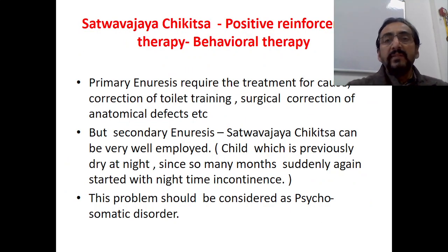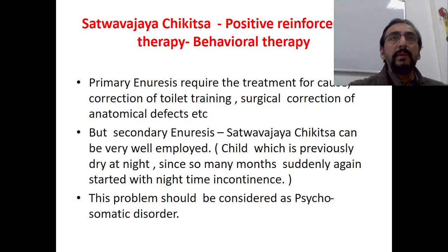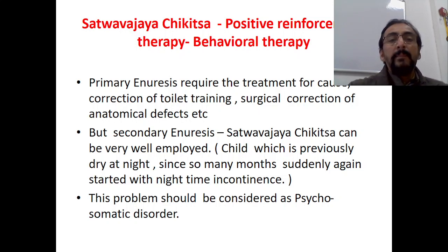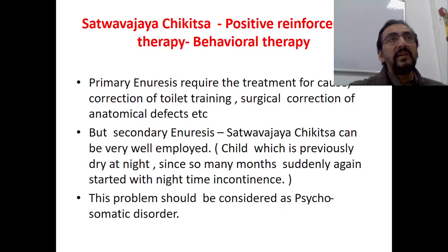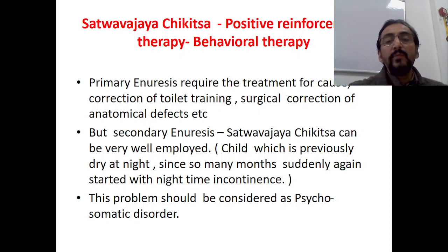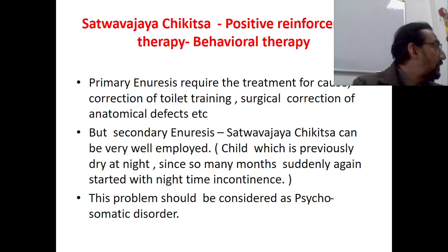Sattva Vajaya Chikisa is nothing but positive reinforcement therapy according to Ayurveda. It includes behavioral therapy, occupational therapy, and everything explained in contemporary science. Primary enuresis requires treatment for the cause and correction of toilet training, along with surgical correction of anatomical or congenital defects. Secondary enuresis — the regressive type — is basically due to psychological problems, stress problems, and maladaptation; Sattva Vajaya Chikisa can be very well employed for this.